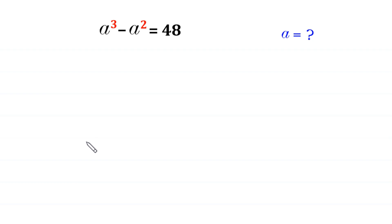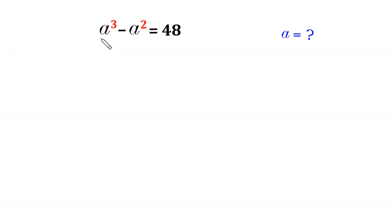Hello, welcome to how to solve this very nice cubic equation. A cubed minus a squared is equal to 48. We need to find all possible values of a.